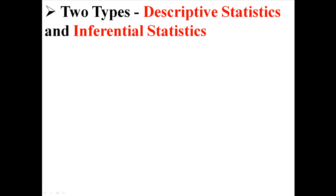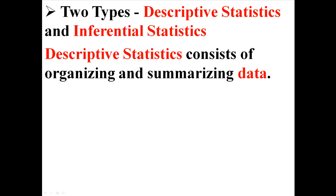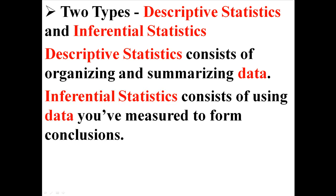So when people talk about statistics, they're usually talking about two main divisions. There's descriptive statistics and inferential statistics. Descriptive statistics consist of organizing and summarizing data, while inferential statistics consist of using the data you've measured to form conclusions, usually about other data.